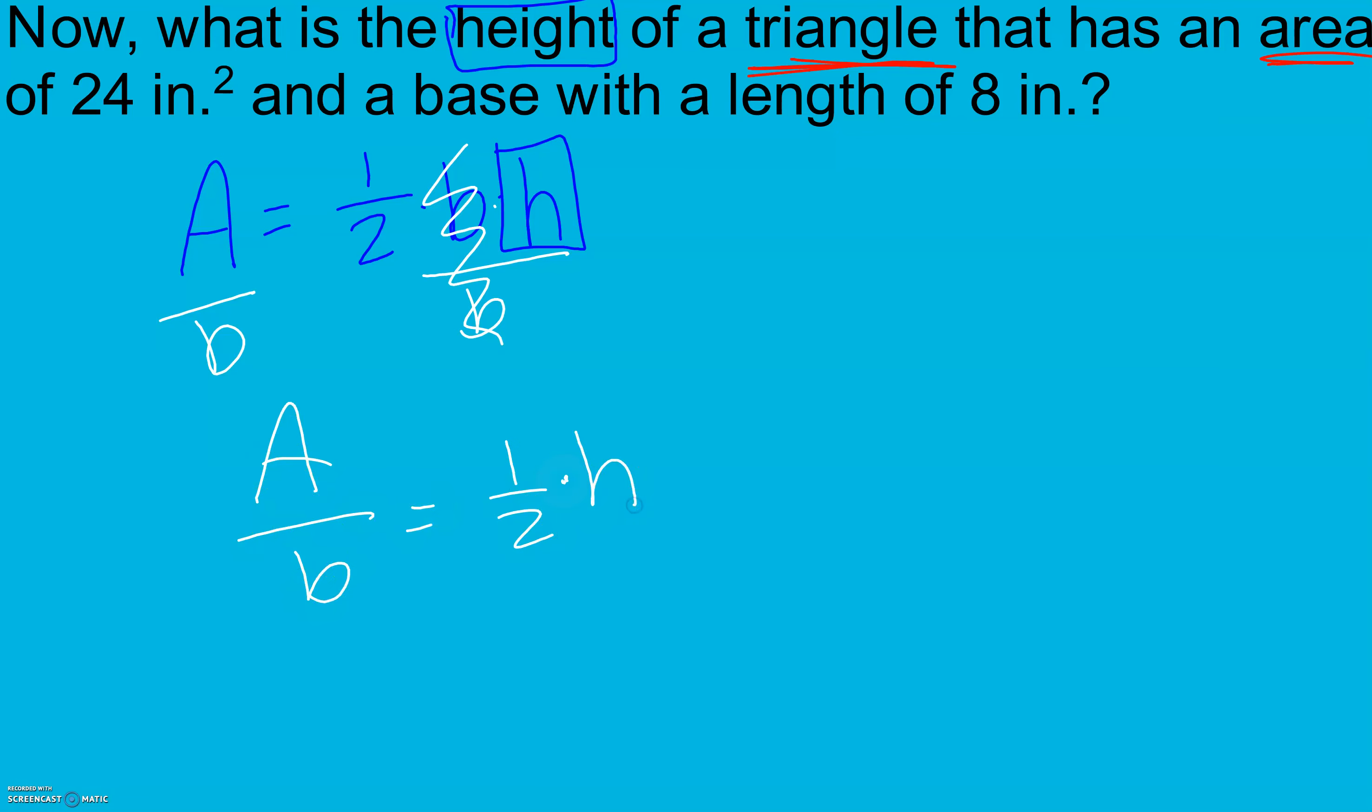It's also being multiplied by this fraction. And remember we get rid of multiplication by a fraction by multiplying by its reciprocal. So I'm going to multiply by 2 over 1. So I'm going to get 2a over b equals my height.